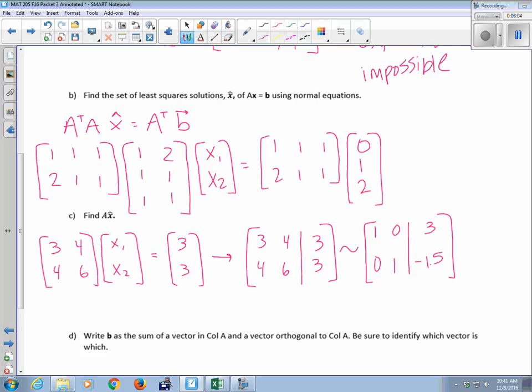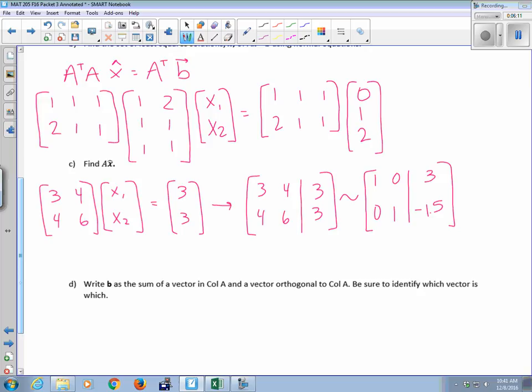This is my X hat, 3, negative 1.5. It gets me as close to B as I can get. So X hat, 3, negative 1.5.